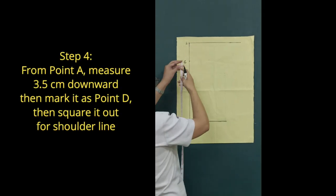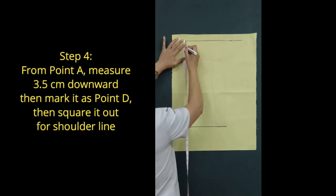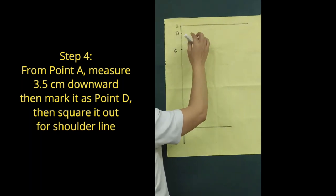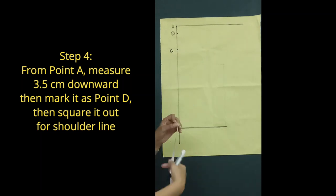Step 4: From point A, measure 3.5 cm downward. Then mark it as point D. Then square it out for shoulder line.